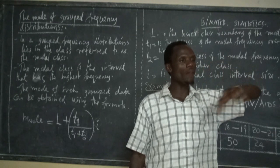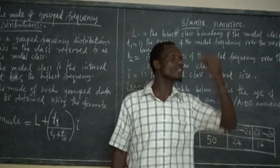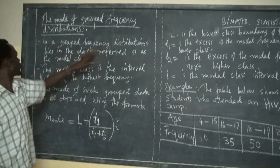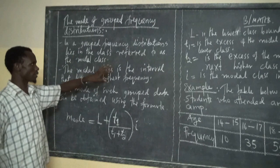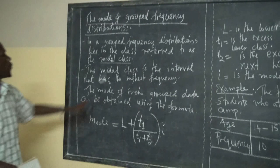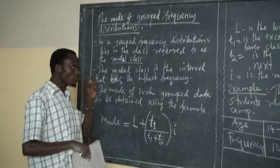The mode of a grouped frequency distribution: in an ungrouped distribution, you only look at the value with the highest frequency. But in a grouped frequency distribution, the class with the highest frequency is referred to as the modal class. The modal class is the interval that has the highest frequency.